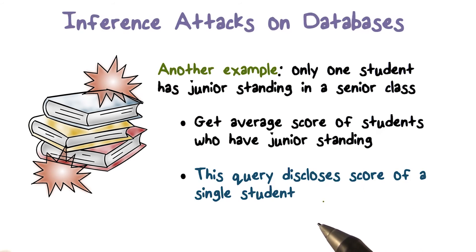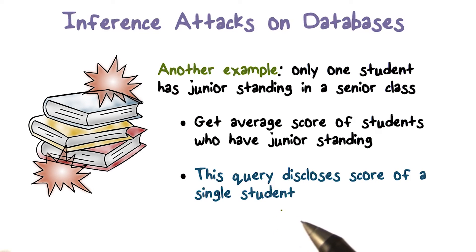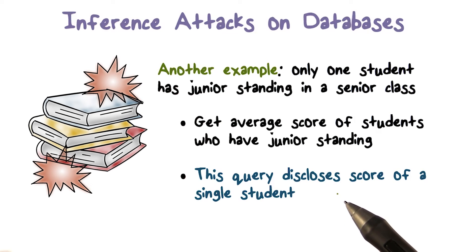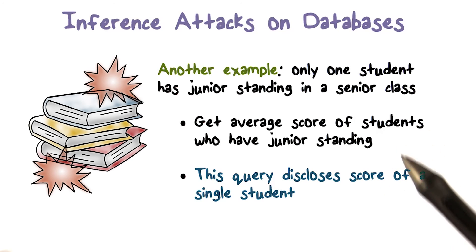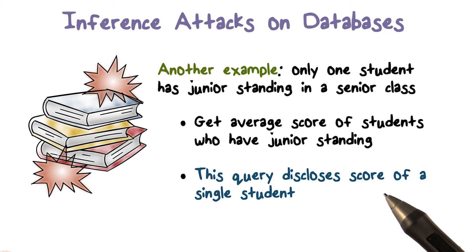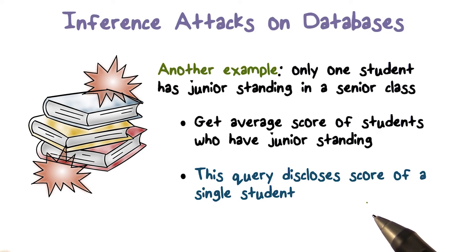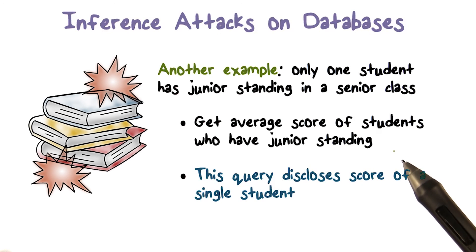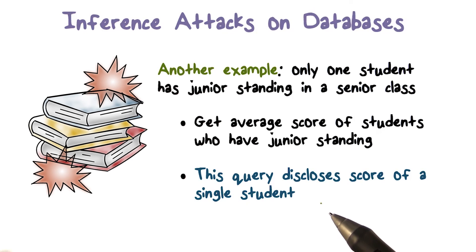So this query, if there's only one student, the result it's going to return is going to be the score of the student who had junior standing. This is another example where the problem occurs because we're computing the average, which is an aggregate that is authorized, over a small set of tuples. In the extreme case, there's only one tuple, and in that case it's the exact score. So this query again allows someone to make an inference: the student with junior standing — the average we get is his or her score.